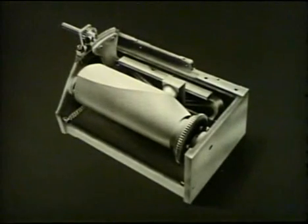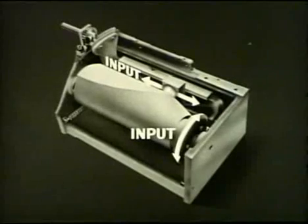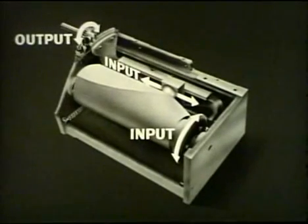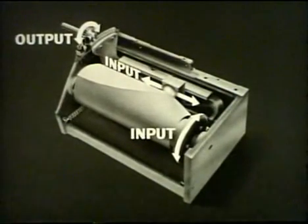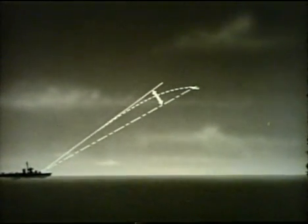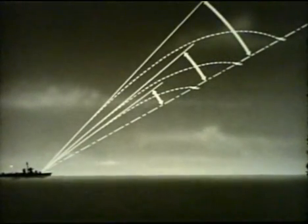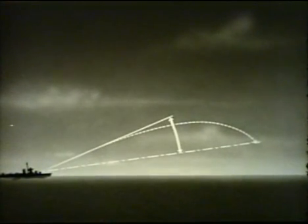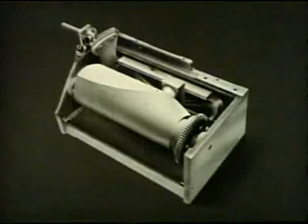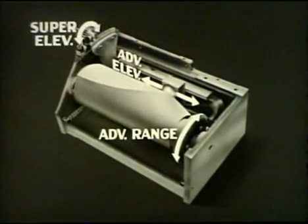A barrel cam, also called a three-dimensional cam, computes from two different inputs and delivers one output. The barrel shape is the working surface. The example shown here computes superelevation. Gun elevation is the sum of superelevation and advance elevation of the target. Superelevation increases as advance range increases, but not in direct proportion. Superelevation decreases as advance elevation increases, again not in direct proportion. Thus, superelevation is determined by advance range and advance elevation, both of which are the inputs to this cam; the output is superelevation.